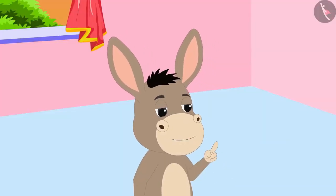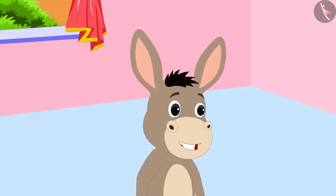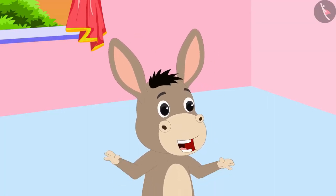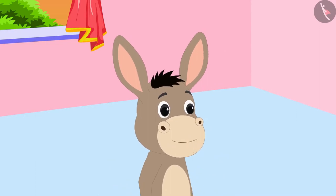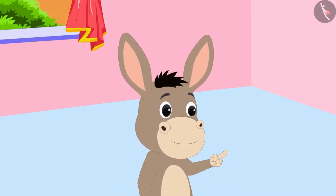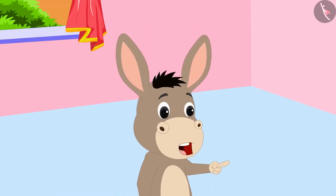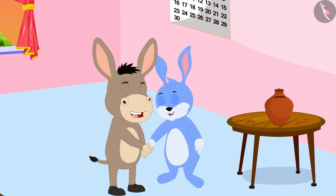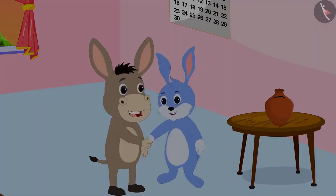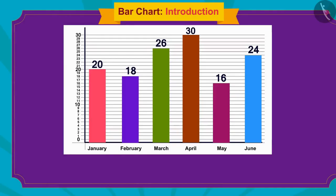Well done, Bunny. You learnt very quickly. Now, just like this, you continue saving money so that by the end of the year you can accumulate a lot of money. Bunny promised Bhoala that he would continue to save money. Children, in this video we learned about bar charts. In the next video, we will learn more about it through some interesting examples.